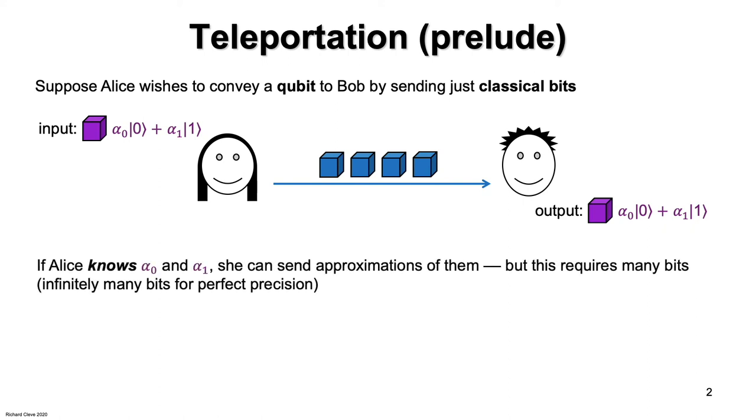Now if Alice knows what the amplitudes of her state are, alpha0 and alpha1, she can send approximations of them. But this requires many bits for good approximation, and infinitely many bits for perfect precision.